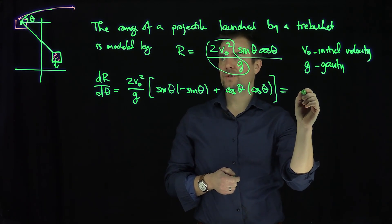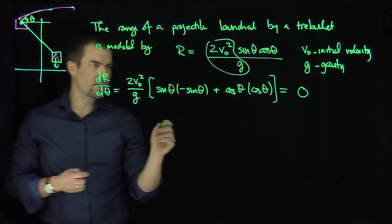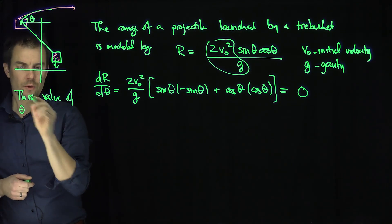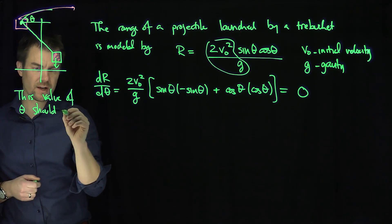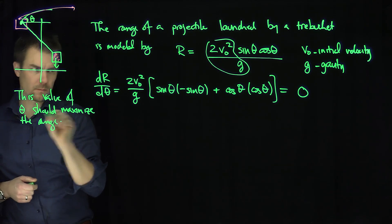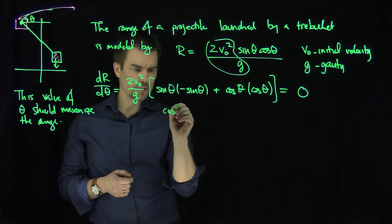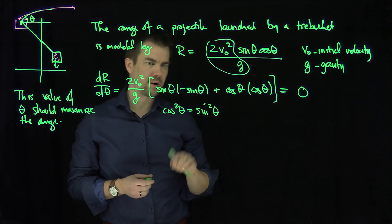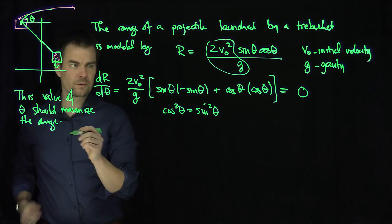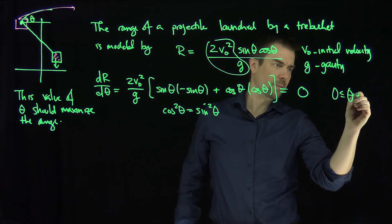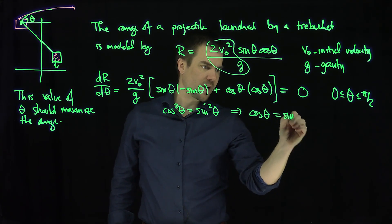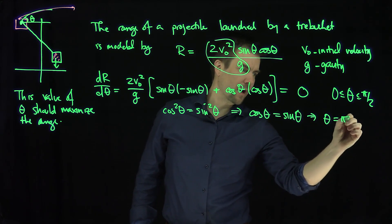Plus the second function, cosine of theta, times the derivative of the first, which is cosine of theta. So this is cosine squared minus sine squared. I want to optimize this, so I set this equal to zero. This value of theta should maximize the range, and we'll check that with the second derivative test. So I have cosine squared of theta equal to sine squared of theta. Restricting to theta between 0 and π/2, both are positive, so cosine of theta equals sine of theta, which happens when theta equals π/4.